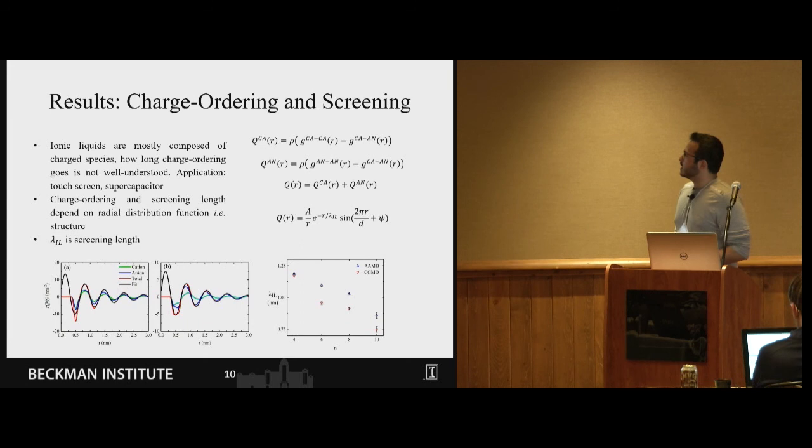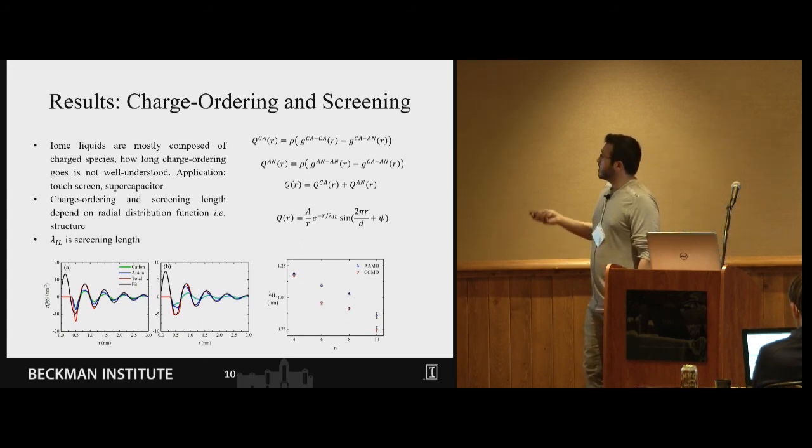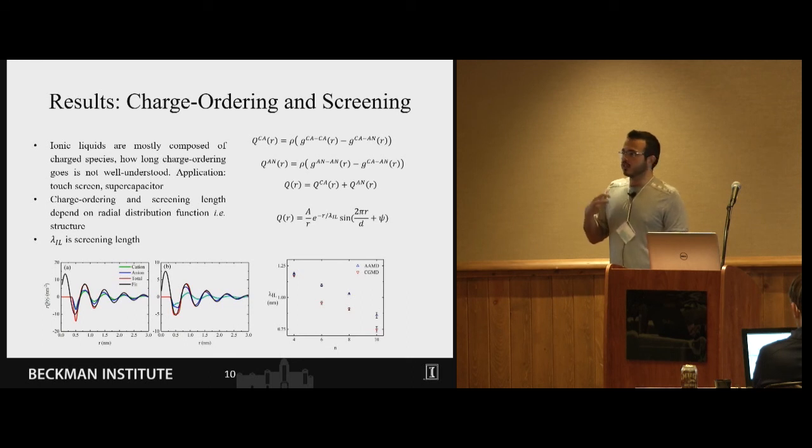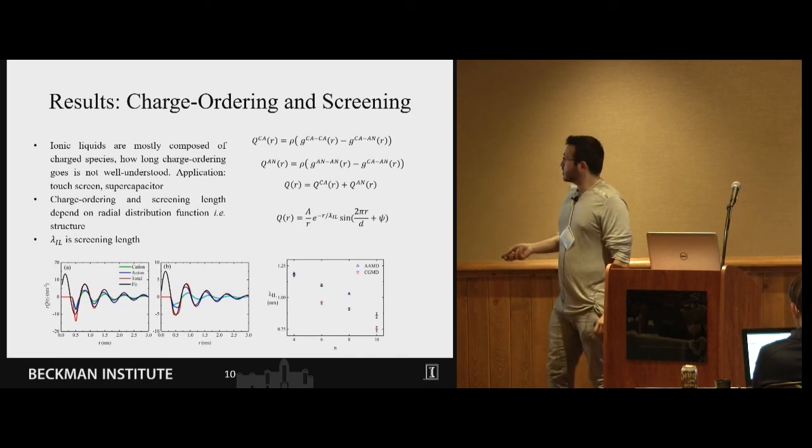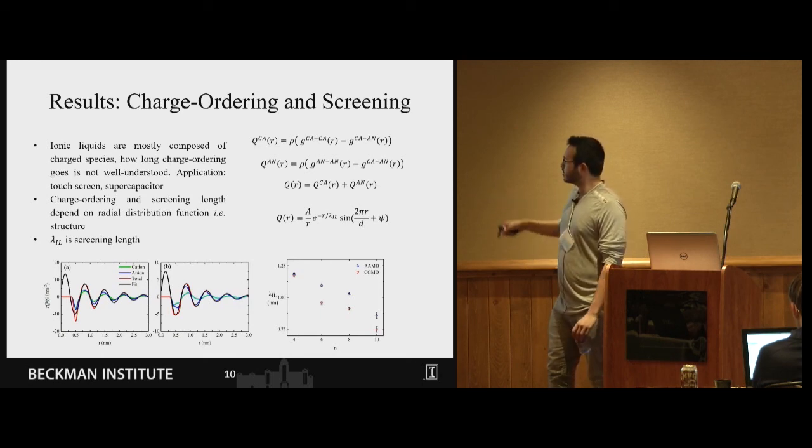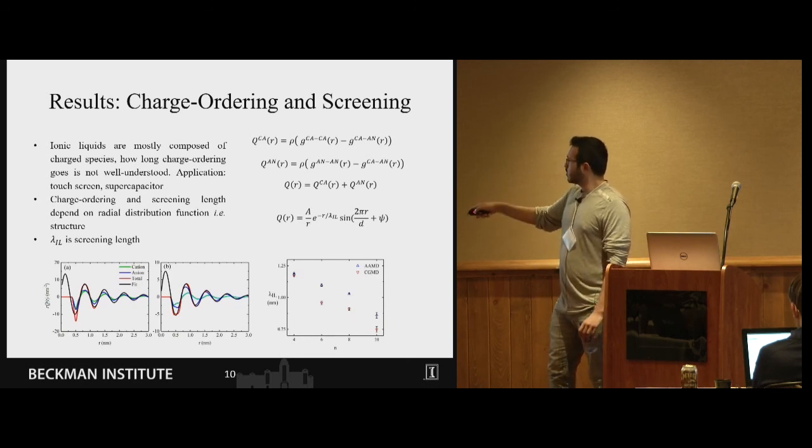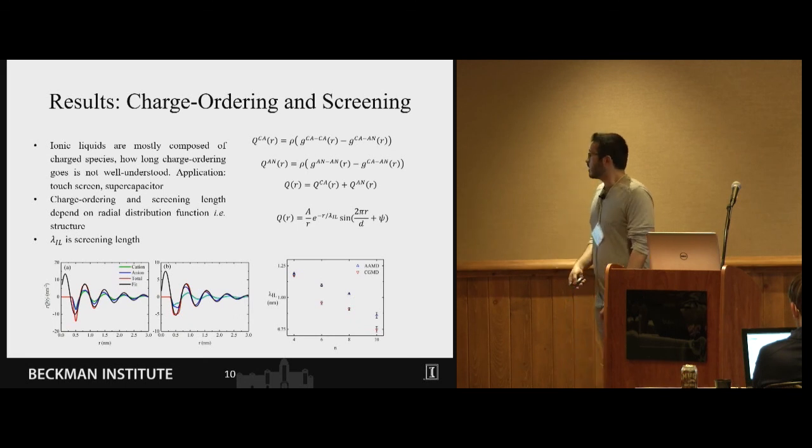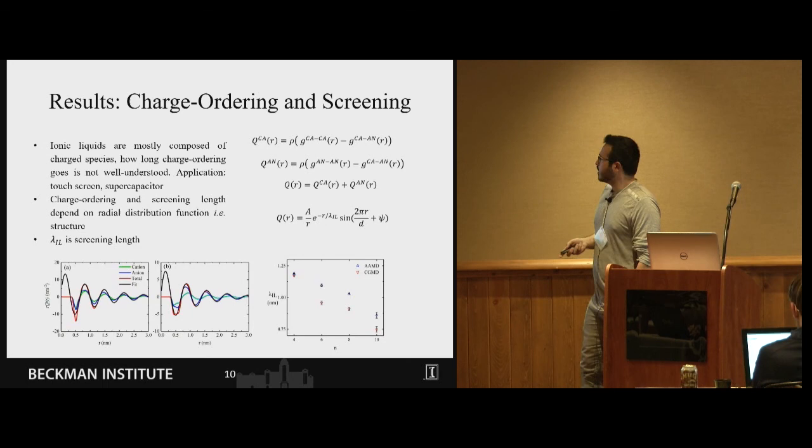We finally studied charge ordering and screening in ionic liquid. As I mentioned these systems are highly charged and there are a couple of experimental studies going on about how long-range are the interactions, and people are coming up with new data every day and there is some dispute around this issue. We did a large all atom MD and CG simulation to obtain the screening parameter. Ionic liquids are so structured so we don't expect this formula which is some sort of asymptotic behavior of charge to hold for them, but in long range it holds fairly well for them and we did a large enough system to calculate it for at least three nanometers and we saw that it has a value of 1.20 for C4.